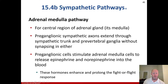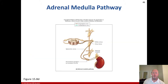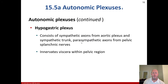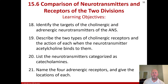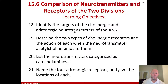That was the only part from Section 15-4 I neglected to note for your exam. Now returning to Section 15-6: the objectives you need to understand are to identify the targets and the cholinergic and adrenergic neurotransmitters of the ANS, describe the two types of cholinergic receptors and the action of each when acetylcholine binds to them, list the two neurotransmitters categorized as catecholamines, and name the four adrenergic receptors and give locations of each.